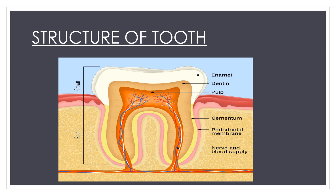Now, what is enamel? It is the hardest substance in the body and is the outside of your tooth. You can see in this diagram that the outermost part is the enamel. After enamel, the second layer is dentine, which is softer than enamel, and the deepest layer is the pulp, which consists of nerves and blood vessels. You can see the nerve and blood vessel supply there — that is the inner part of your tooth.